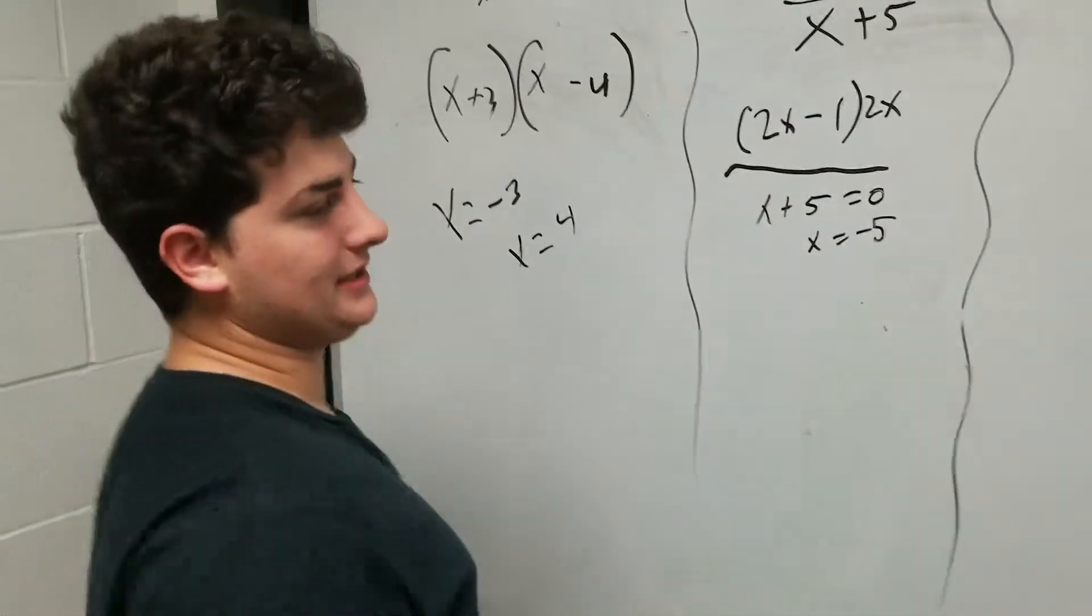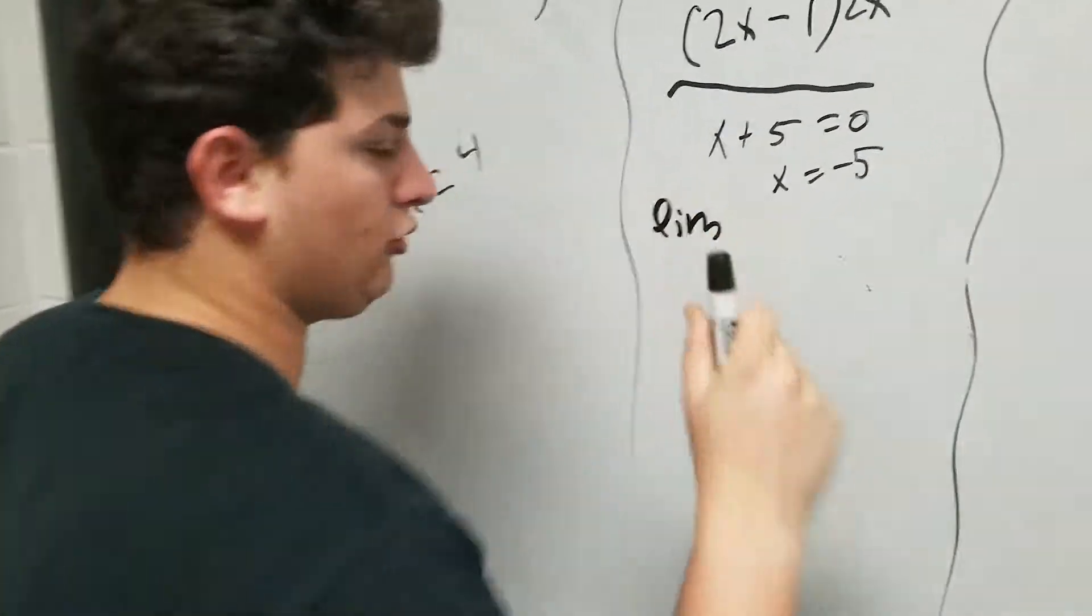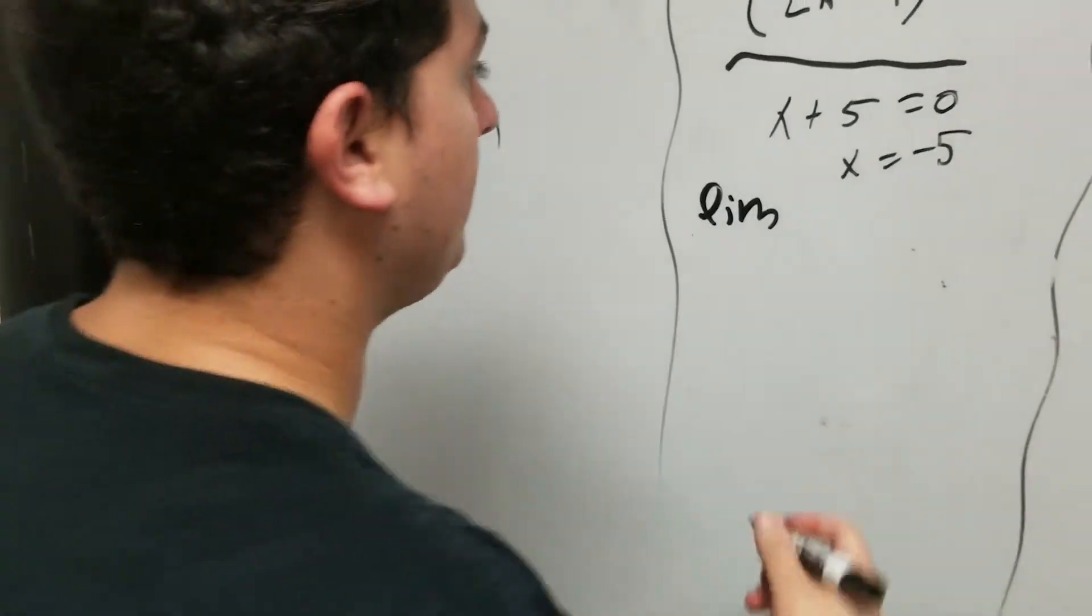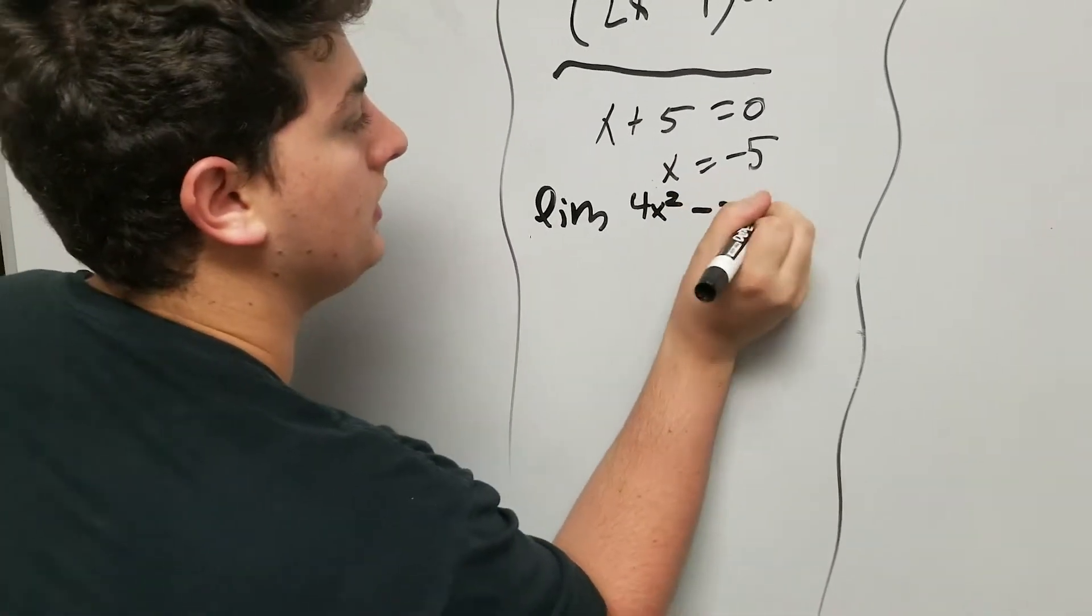After we're done with x equals negative 5, we're going to find the next limit. There's a right side and a left side limit, positive and negative. We're going to write the original equation there.